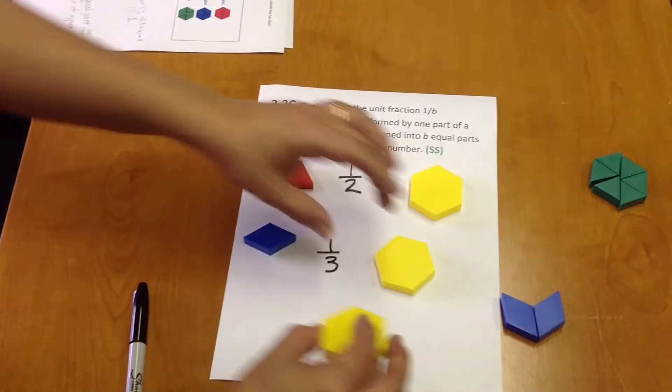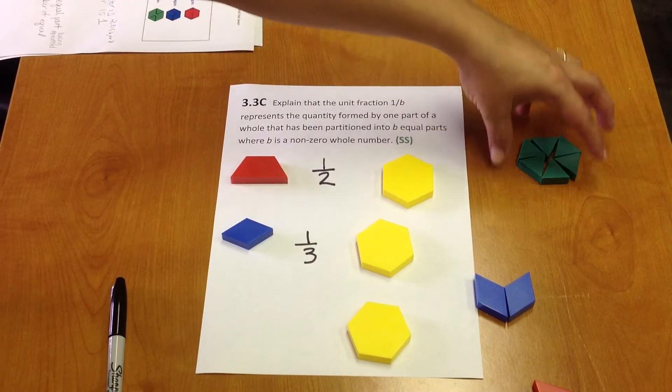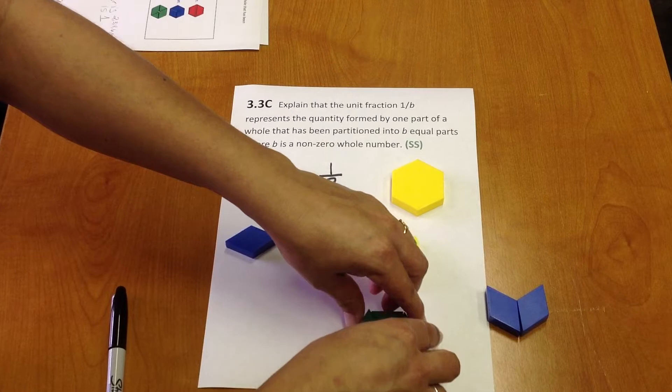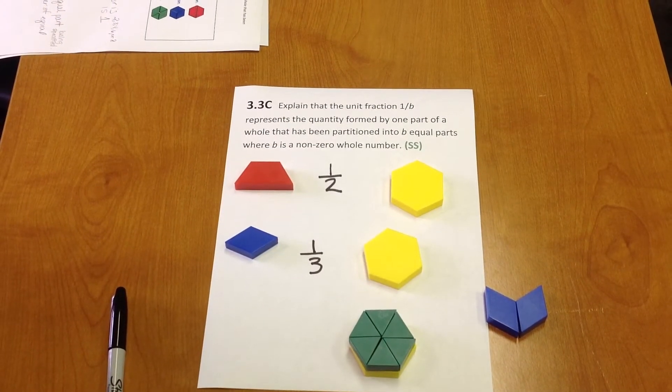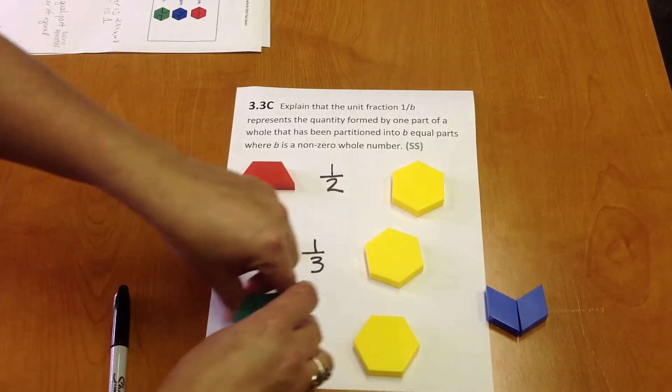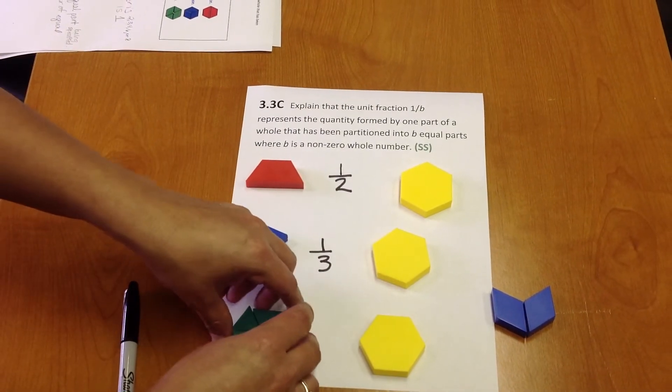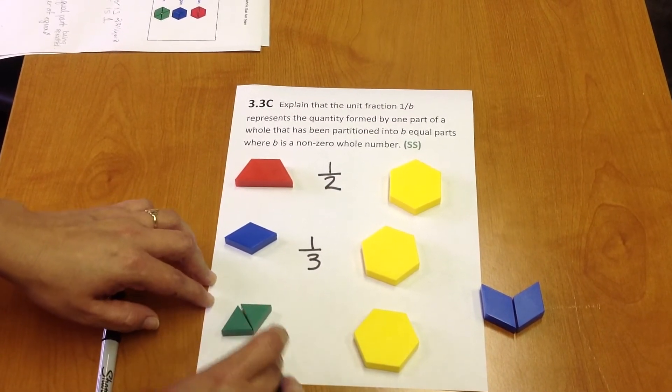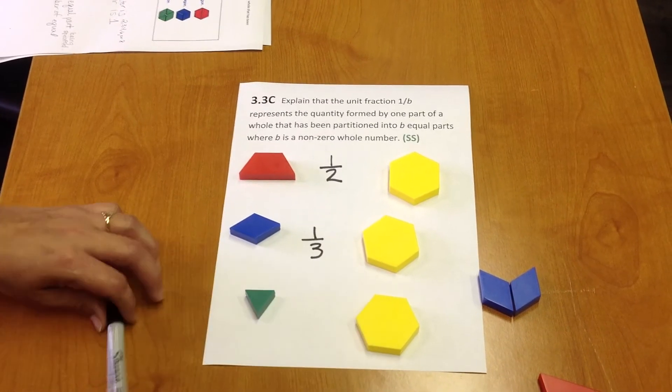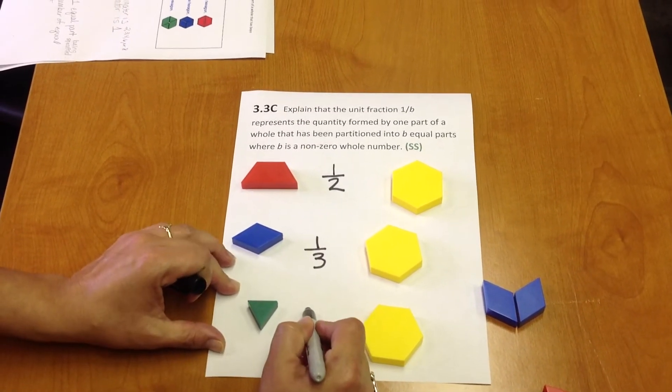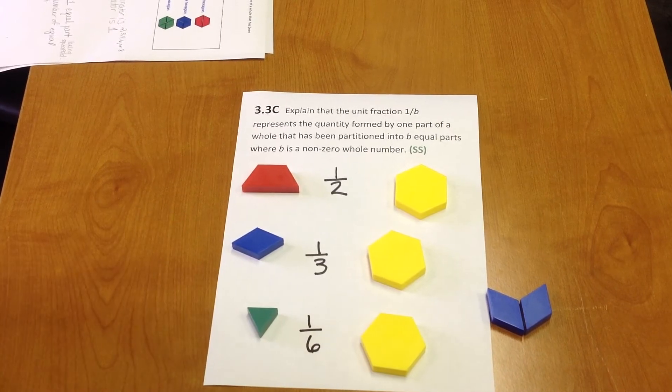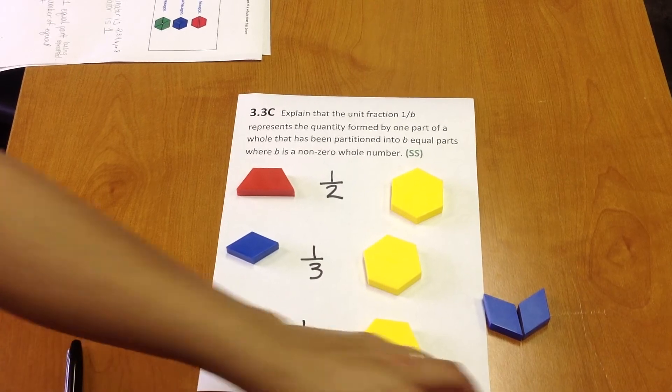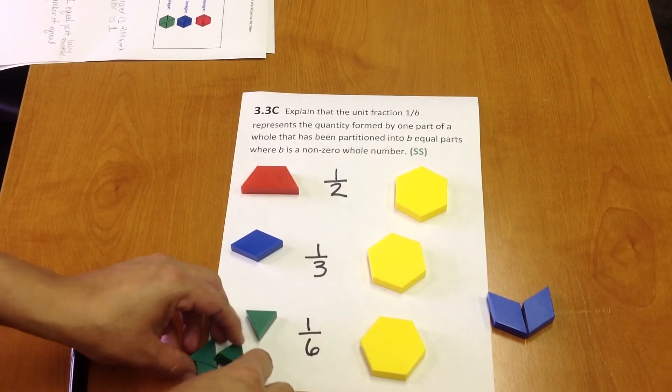One more example with a hexagon and triangles. How many triangles can we use to make that whole? Six. Six triangles can be used to represent the one-whole hexagon. Therefore, each triangle is one-sixth with a six indicating the number of equal parts that are needed to make the whole.